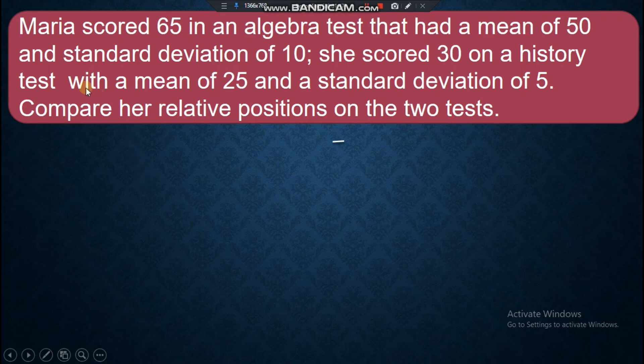Let's have this as a sample problem. Maria scored 65 in an algebra test that had a mean of 50 and standard deviation of 10. She scored 30 on a history test with a mean of 25 and a standard deviation of 5. Compare her relative position on the two tests. We cannot directly compare 65 as a score in algebra and 30 in the score of history. We need to convert it first into a standard score or Z-score before comparing it.